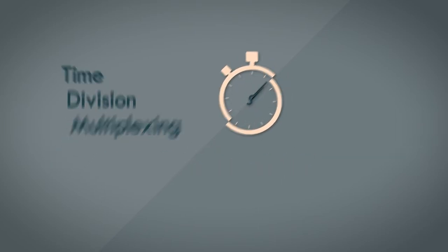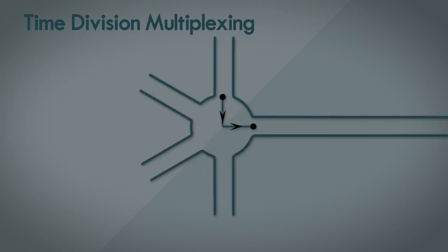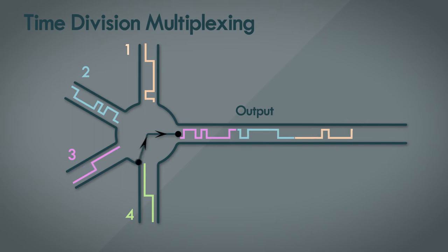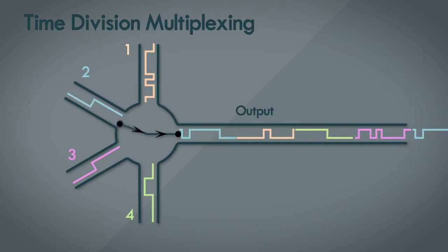It's quite simple really. Think about it as a component where several inputs come in, and one output goes out. Each input signal gets through for a limited duration of time, before it's the turn of the next signal. It's a simple round robin mechanism, where a snippet of each signal gets through, and the whole process loops back around at the end.